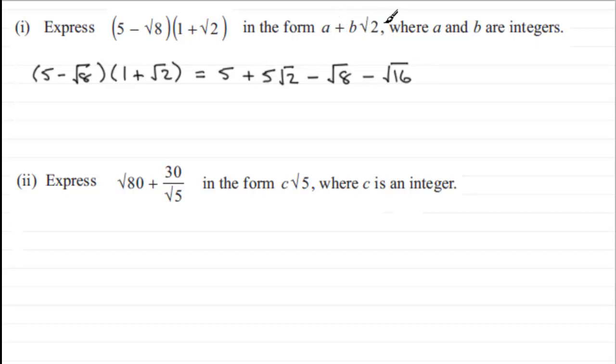Okay, now it does say that express this in the form a plus b root 2, so I'm expecting to get some root 2 values out of this, and I can see I've got one here. But what about root 8? Well, we should be able to break root 8 down by just applying basic rules for surds.